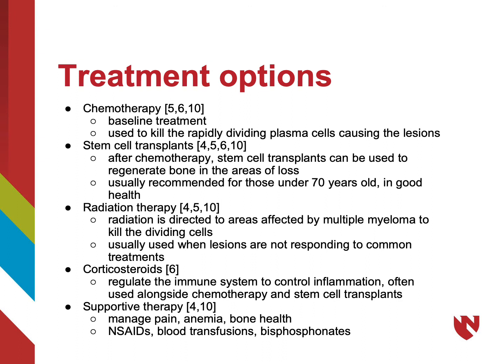Chemotherapy is often considered a baseline treatment and is used to kill the rapidly dividing plasma cells in the multiple myeloma lesions. Stem cell transplants can be used after chemotherapy to help regenerate bone in areas of loss, though one typically needs to be in good health to undergo this therapy. Radiation therapy is another means to treat multiple myeloma, where radiation is directed to lesions to kill dividing cells and stop myeloma growth. Radiation is called upon when myeloma lesions fail to respond to other treatments.